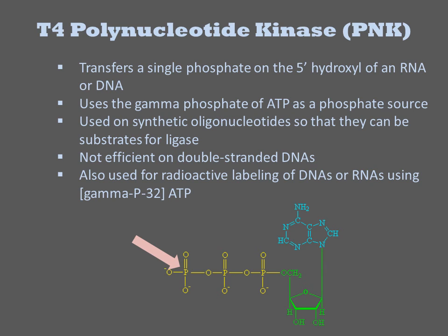T4 polynucleotide kinase transfers a single phosphate to the 5' hydroxyl of an RNA or DNA from ATP. It is the gamma phosphate of ATP, the terminal one, that gets transferred. The enzyme is most commonly used to phosphorylate synthetic oligonucleotides so that they can be substrates for ligase reactions. It works best on single-stranded DNAs and is thus often used to radiolabel DNAs using gamma-³²P labeled ATP.